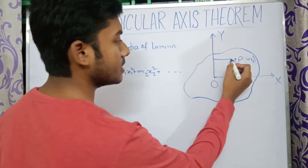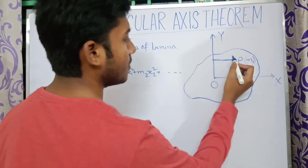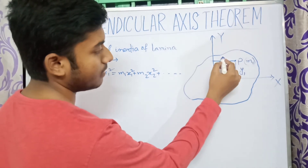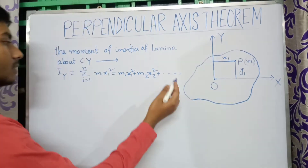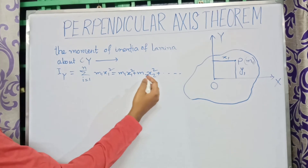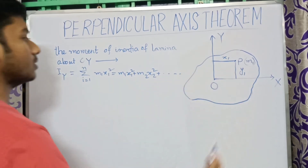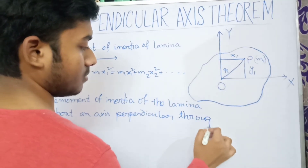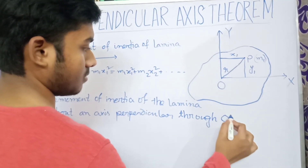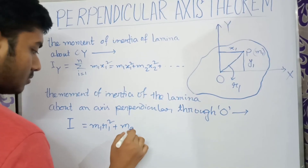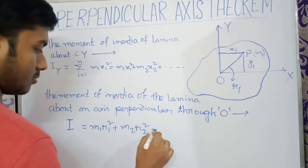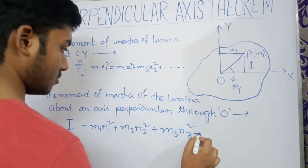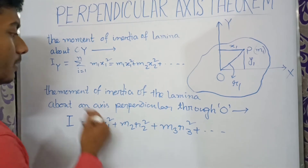Here the distance from the axis Oy is x1, so this will be equal to m1·x1² + m2·x2² + ... and so on for the whole lamina.